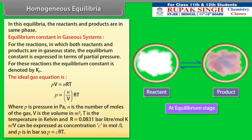Where P is pressure in Pascal, n is the number of moles of gas, V is the volume in m³, T is the temperature in Kelvin, and R equals 0.0831 bar·liter per mole·Kelvin. Since n/V can be expressed as concentration C in mole per liter, and P is in bar, we have P = CRT.